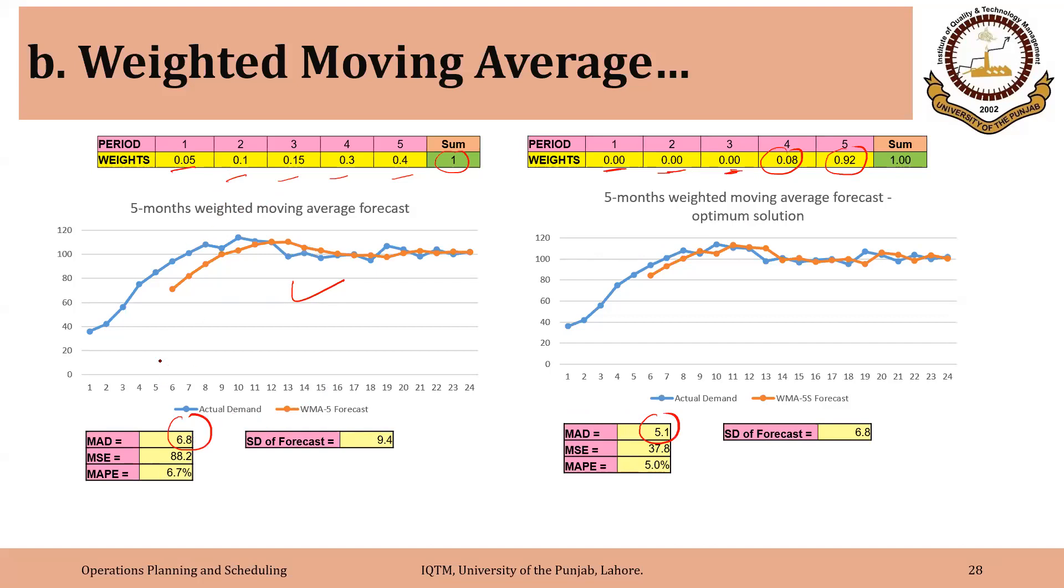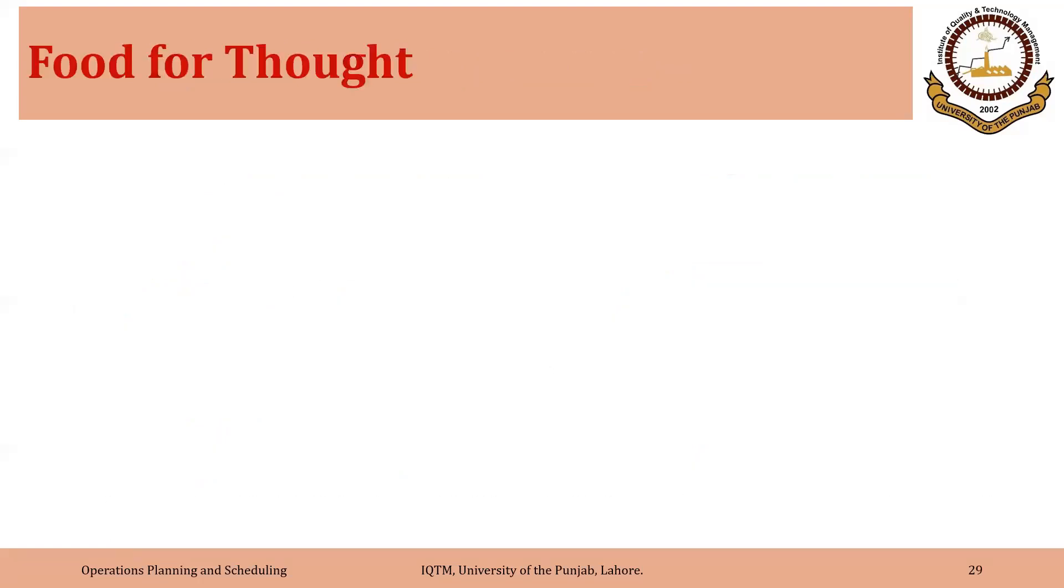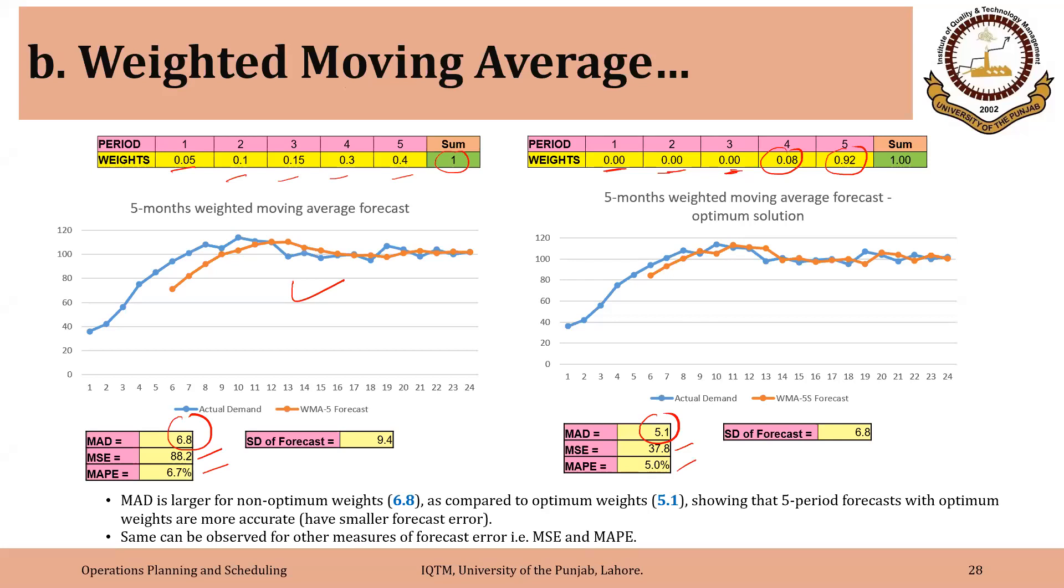So it was 6.8 in the case of weights assigned arbitrarily and it was 5.1 for the optimum weights. And you can see for MSE 88.2, 37.8 and MAP 6.7% and 5.0%. Now, the main takeaway is very obvious that this is the optimum solution. Now you can check it and you can play with different values. You can never get errors smaller than these.